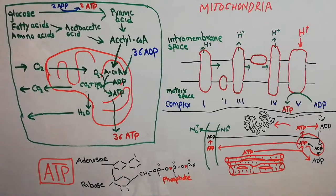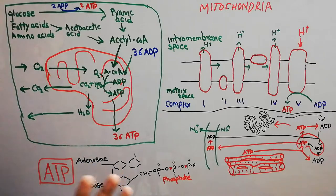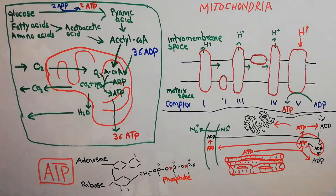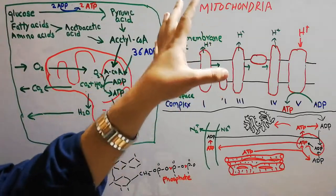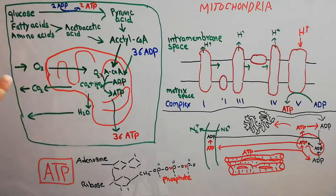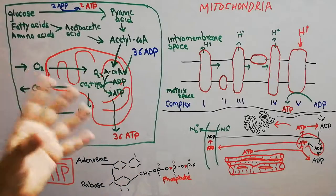Today we are discussing mitochondria. Previously we discussed cell organelles, noting there are two types inside the human body: those surrounded by a membrane and those which are not. Out of those surrounded by a membrane, we have already discussed the nucleus, Golgi apparatus, and today we are discussing mitochondria. Mitochondria is also a very important cell organelle and it is also surrounded by a membrane.